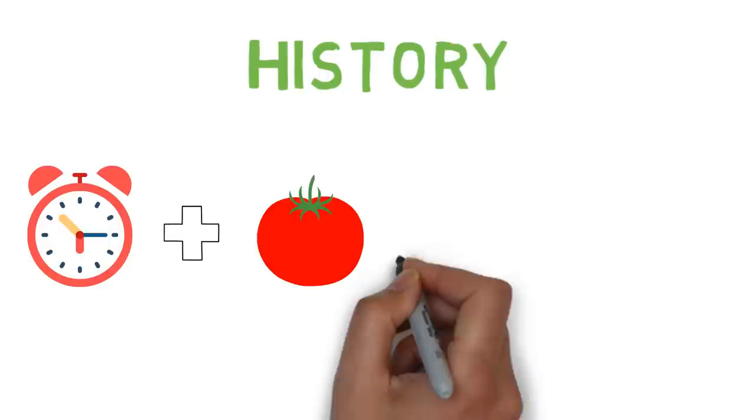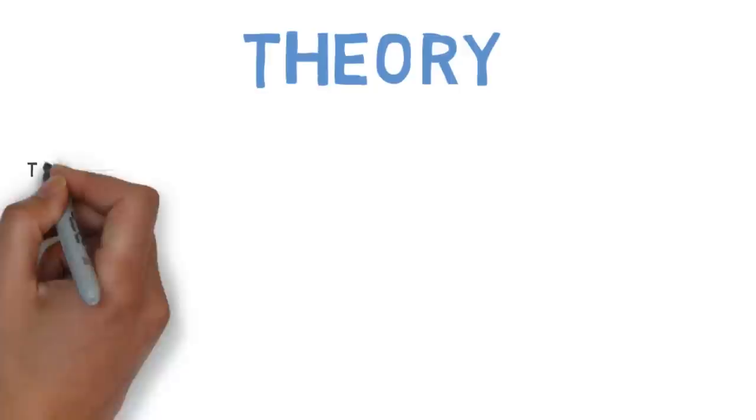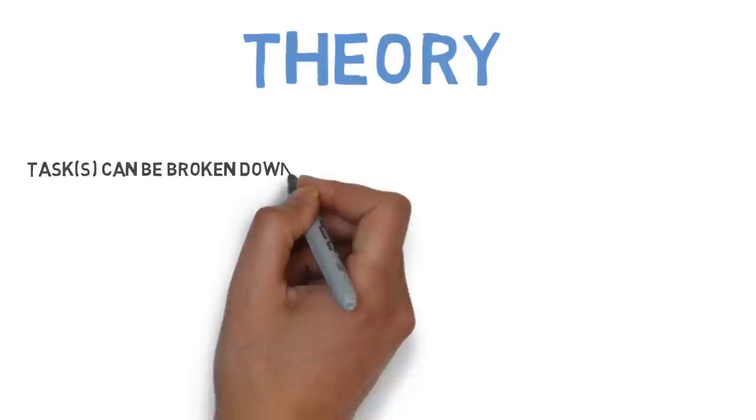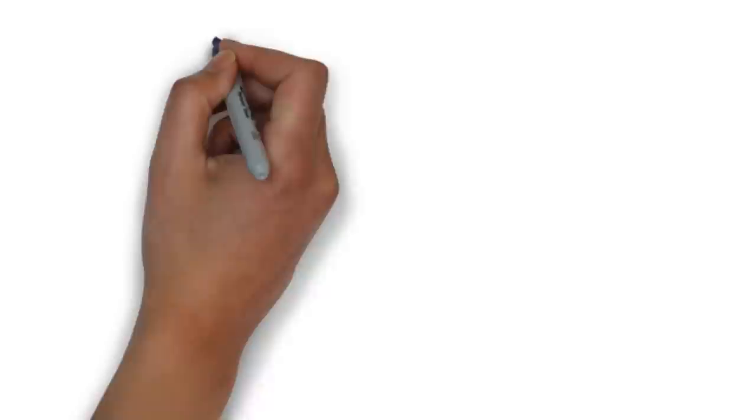Since then, this technique has gained much popularity in various productivity and self-improvement circles. The theory behind it is that any large task or series of tasks can be broken down into short timed intervals called Pomodoros. Each is separated by a short break. This takes advantage of the fact that our brains have limited attention spans.